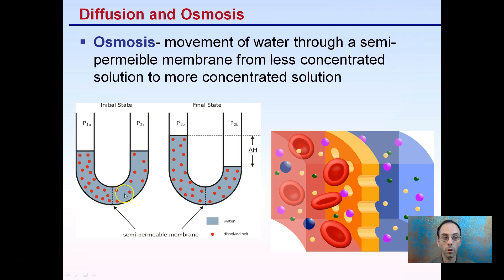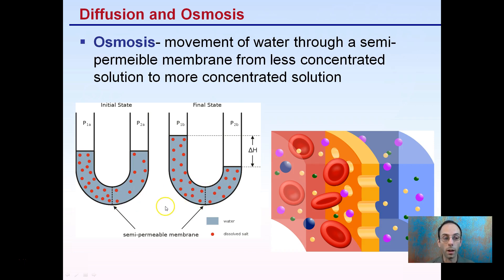Here we have a less concentrated solution and a semi-permeable membrane — the water is going to move across. We see that here where the water level has now increased on this side and decreased on the other side, a change in height (delta H). At the end, the concentration of dissolved salts on the left and right side is the same. Because water moved across, we now have an even spread between the two sides. In this case, the dissolved salts cannot move across the membrane — so this is osmosis as it naturally occurs.